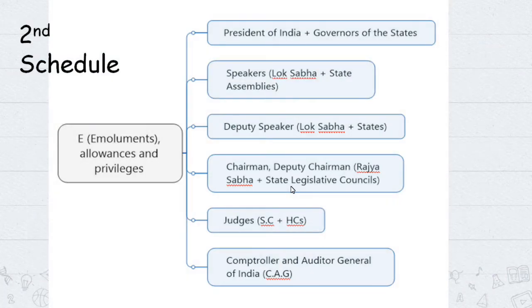The Second Schedule covers emoluments, allowances, and privileges. It includes: the President of India, Governors of States, the Speaker of Lok Sabha and State Assembly Speakers, the Deputy Speaker, and members of State Legislatures.